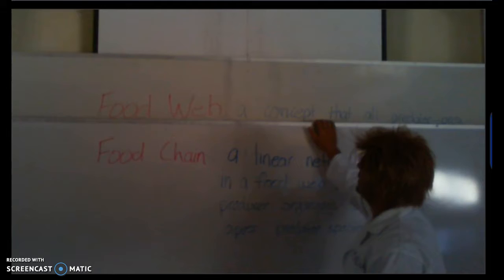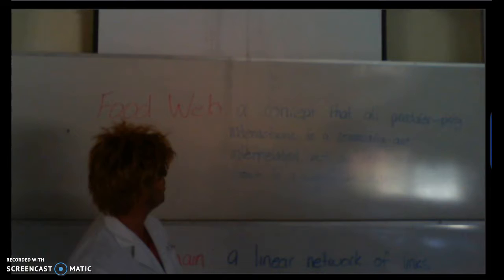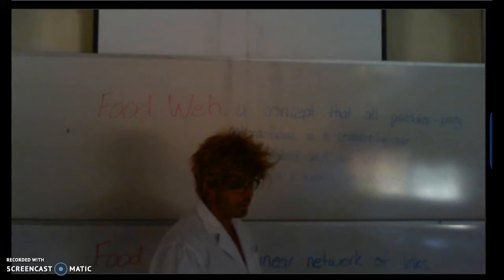Food webs are a concept that all predator-prey interactions in a community are interrelated and are sometimes drawn in a web-like image. I'll show you an image of those in a second.